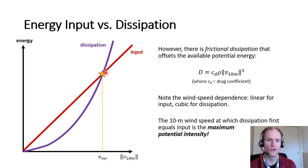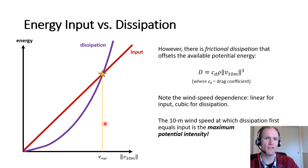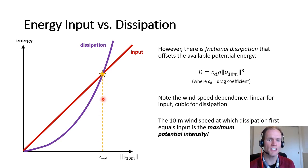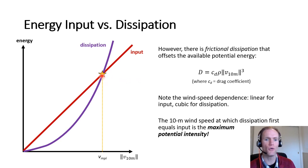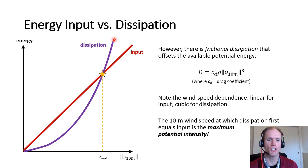We define the point where those two curves cross — where the star on the x-axis falls — as the maximum potential intensity, sometimes called just the potential intensity. For a given enthalpy difference relative to the sea surface temperature and atmospheric conditions, this MPI defines the point where energy input from the ocean no longer exceeds frictional energy loss after conversion to kinetic energy. It depends on sea surface temperature, efficiency, and outflow temperature.